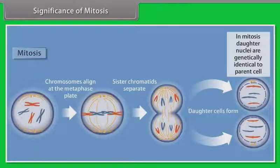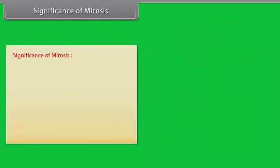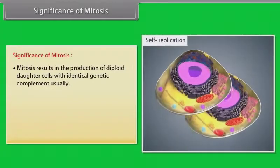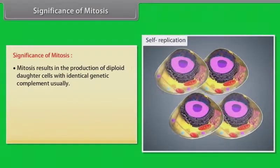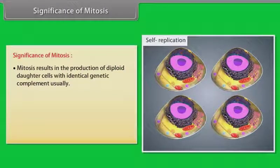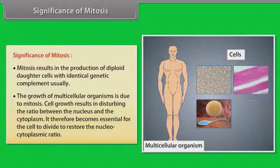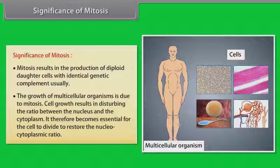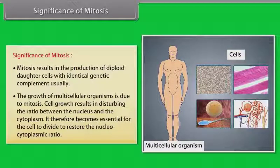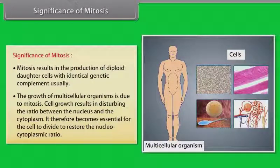Mitosis results in the production of diploid daughter cells with identical genetic complement. Usually, the growth of multicellular organisms is due to mitosis. Cell growth results in disturbing the ratio between the nucleus and the cytoplasm. It therefore becomes essential for the cell to divide to restore the nucleocytoplasmic ratio.